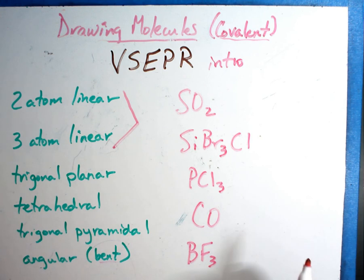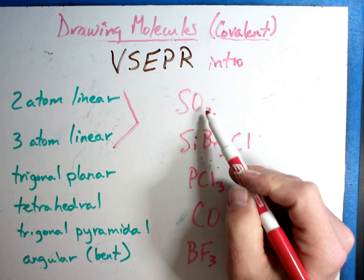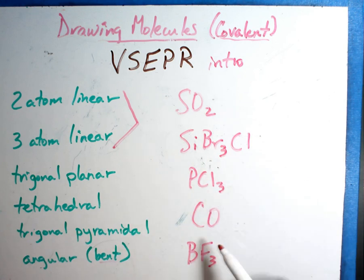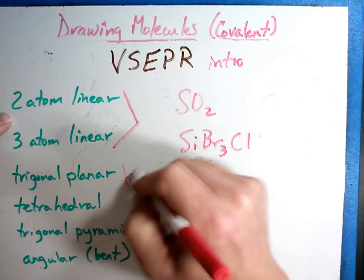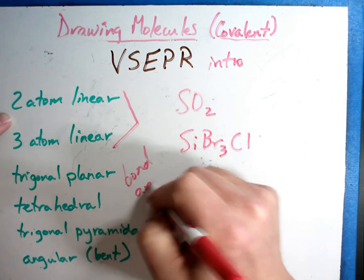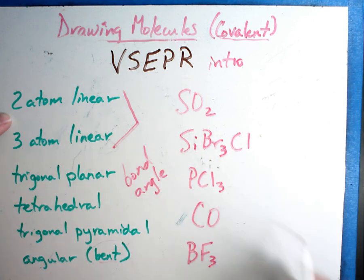And what I want you to do is when you watch the next video that shows you each of these, then I want you to match these pictures you drew to each of the shapes. And they're going to talk about the shape and what is called the bond angle that goes with each. The shape and the bond angle.